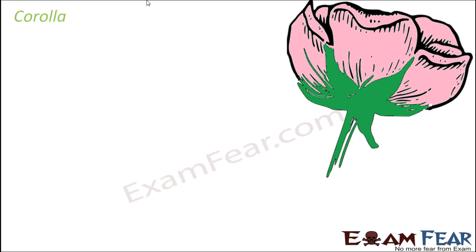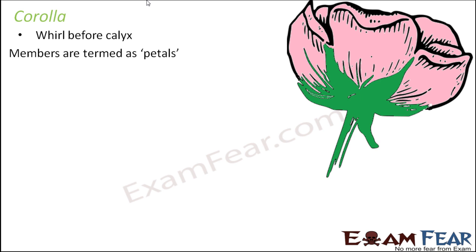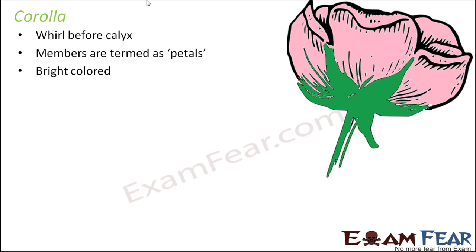The next whorl is Corolla, which lies inner to the Calyx. Members are termed as petals — the colored petals. They are bright colored and come in a variety of colors in different types of flowers: red, pink, yellow, and many more.